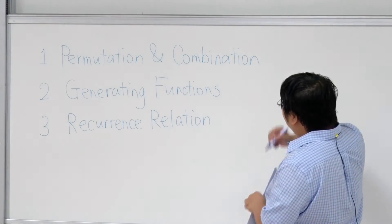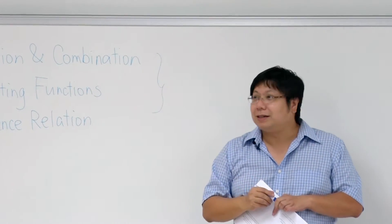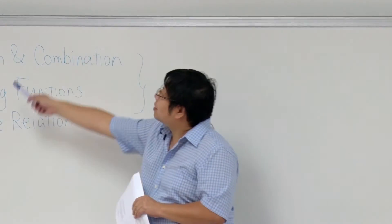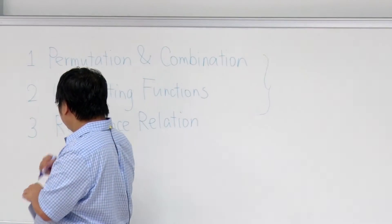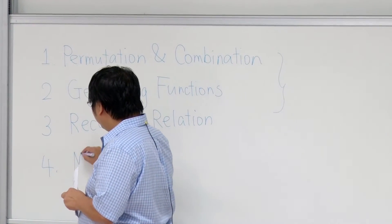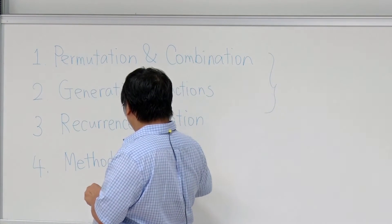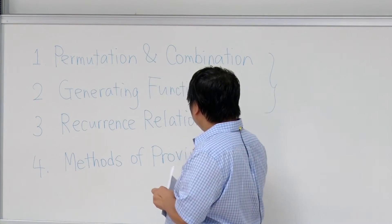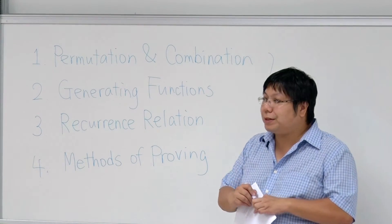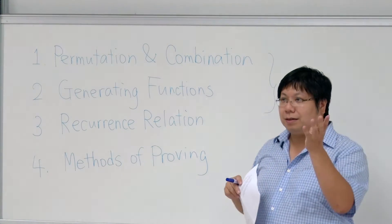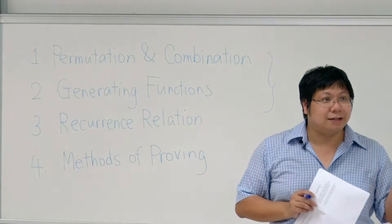Throughout this course, we will see that these three topics — combinatorics, generating functions, and recurrence relations — are highly related. This is the first part of the course. The next part will cover methods of proving: in particular, we will revisit mathematical induction and proof by contradiction.